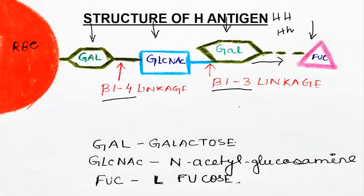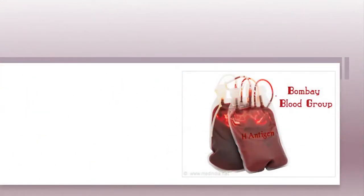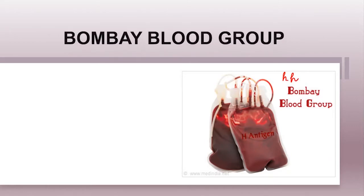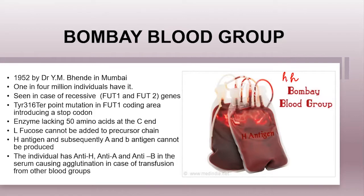But what will happen if the recessive pure form of this H gene is present on the q arm of the 19th chromosome? The condition in which we have the recessive pure form of the H gene is known as the Bombay blood group. It was first found out by Dr. Y.M. Bhinde in the year 1952 in the city of Mumbai in India.